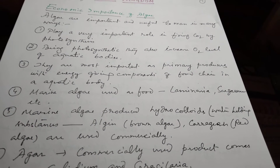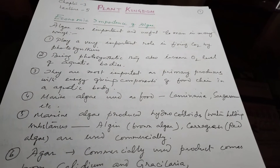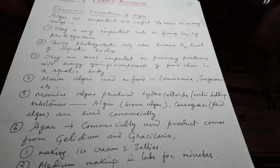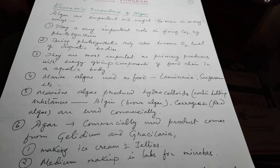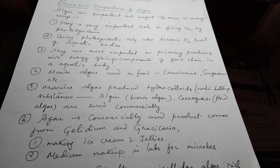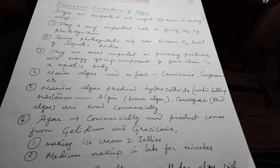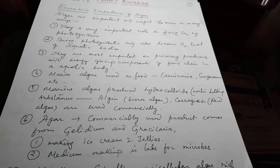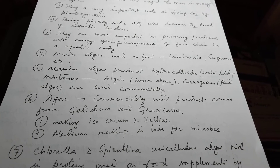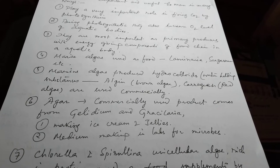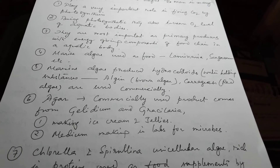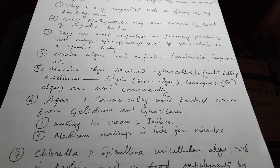जो colloidal substance है ये भी मिलता है algae से। Number 6: commercially used product agar comes from Gelidium and Gracilaria. अगर का use यह है कि ice cream में और jelly में इसको use किया जाता है। और दूसरा use है medium making in labs for microbes — जब bacterial medium बनाएंगे, bacteria को medium में grow करने के लिए, तब ये use हो जाएगा।